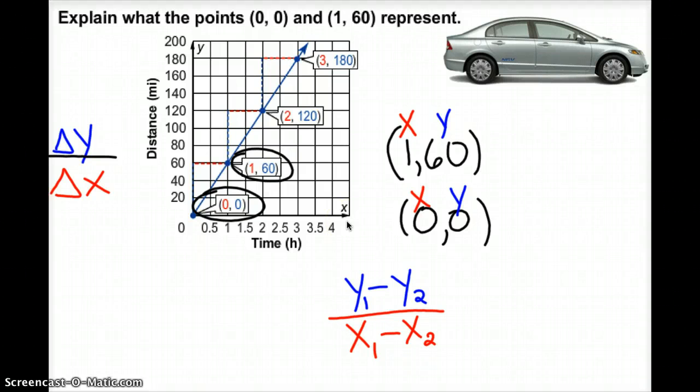So I'm going to take 60 minus 0. That's my change in y. And then I'm going to take 1 minus 0. When I work that out, 60 minus 0 is 60, and 1 minus 0 is 1, which simplifies to 60.